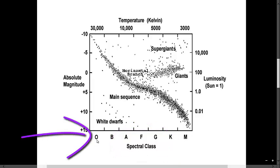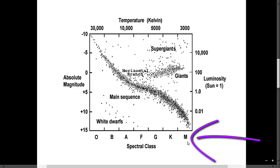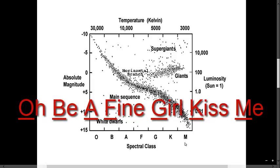Type O stars are the hottest and type M stars are the coolest. One way you can remember the spectral classes is through the mnemonic, O be a fine girl kiss me, OBAFGKM.